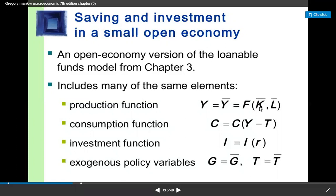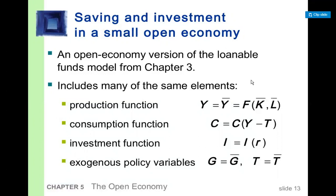When labour and capital are fixed, then definitely output will also be fixed, that is Y bar. So we can say that fixed output is a function of fixed labour and fixed capital. That is the first function discussed in the small open economy Saving and Investment Model.